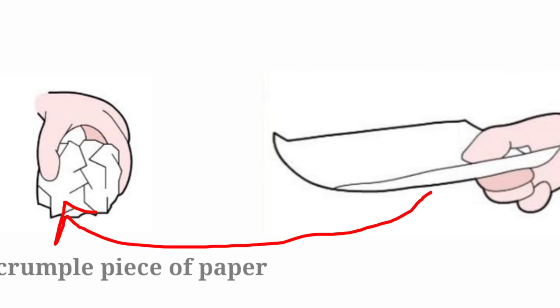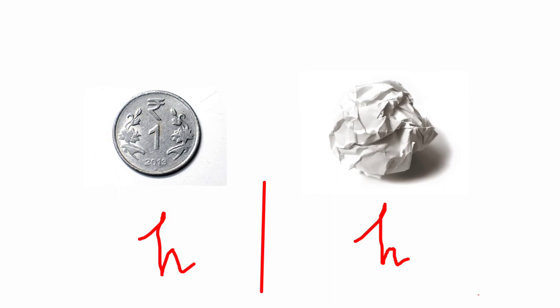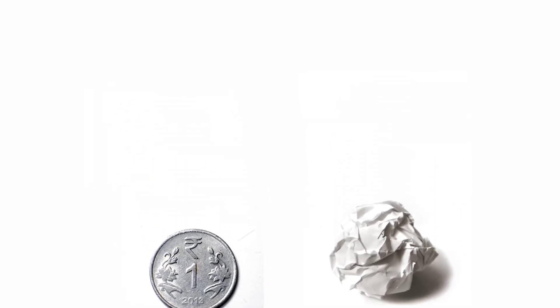Now let's reduce the surface area of the paper. We use a crumbled piece of paper and again do the same activity. Then you observe that both will hit the ground at approximately the same time.